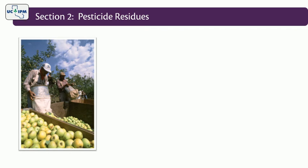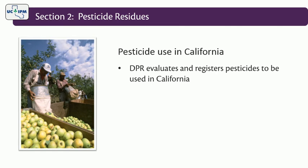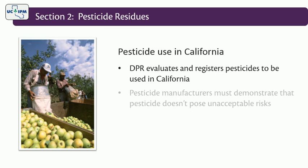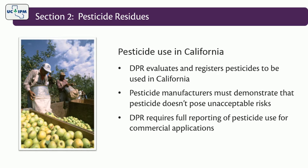Before a pesticide can be used in California, it must also be evaluated and registered by DPR. The manufacturer must present test data to show the pesticide will not pose unacceptable risks to workers, consumers, or the environment. DPR also has the statutory authority to require full pesticide use reporting in California for commercial applications. California has the nation's toughest pesticide regulations and the largest and best trained pesticide enforcement organization to make sure the rules are followed.